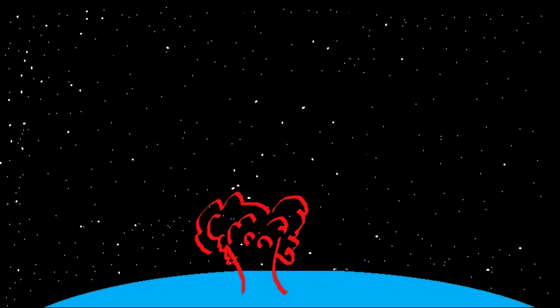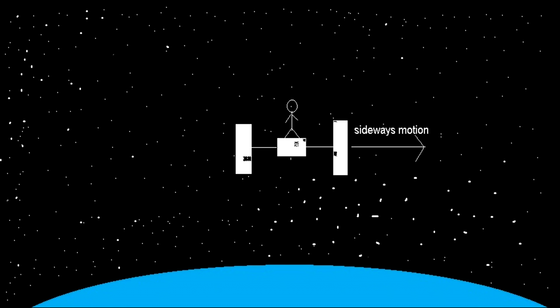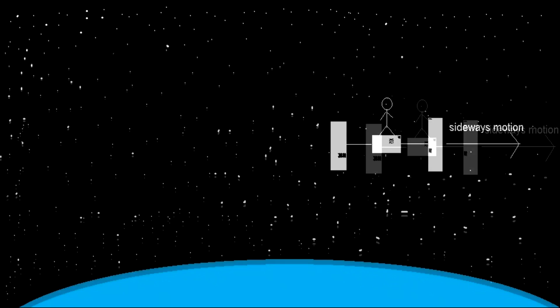If the astronauts didn't have any sideways motion, they would just smash into Earth. And if the astronauts didn't feel any gravity from Earth, then they would just leave Earth's orbit.